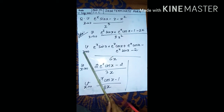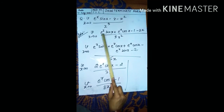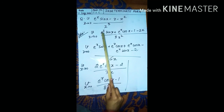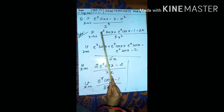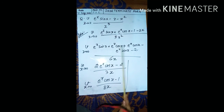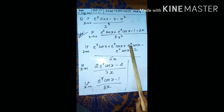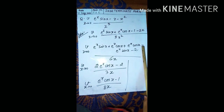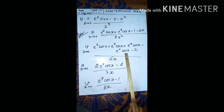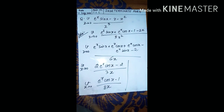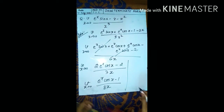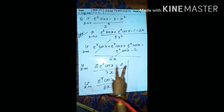We need to differentiate again using L'Hôpital's rule. Differentiating e to the power x times sin x again gives e to the power x times sin x plus e to the power x times cos x, and differentiating e to the power x times cos x gives e to the power x times cos x minus e to the power x times sin x. The two e to the power x times sin x terms cancel, leaving 2 times e to the power x times cos x minus 2 upon 6x.